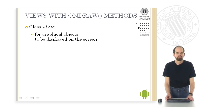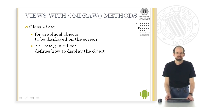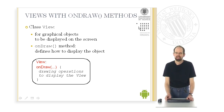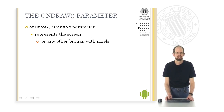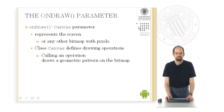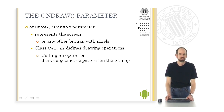The class View is used for programming graphical objects to be displayed on the screen. The class View defines an onDraw method, and this onDraw method defines how to display the object. The onDraw method gets a canvas parameter. This canvas represents the screen or any other bitmap with pixels, and the class Canvas defines drawing operations. Calling such a drawing operation defines how to draw a geometric pattern on the bitmap on the display.